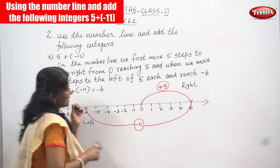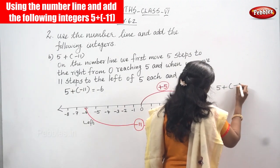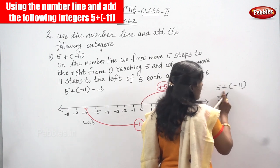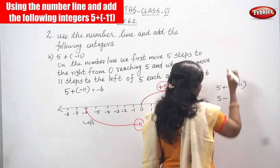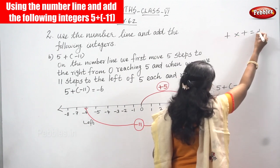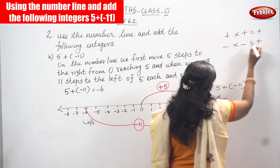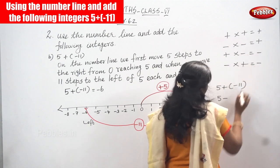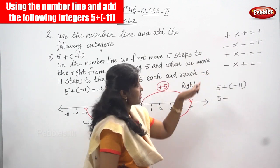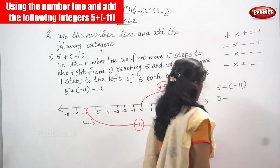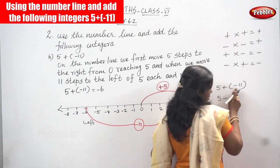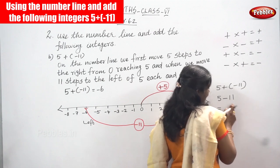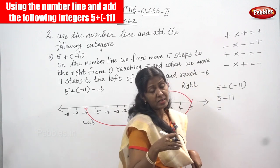So 5 + (-11): plus into minus gives minus, so it becomes minus 5. The sign rules are: plus into plus gives plus, minus into minus gives plus, plus into minus gives minus, and minus into plus gives minus. So since we have different signs, you are going to subtract only. If you have the same sign, you add; if you have a different sign, you subtract.